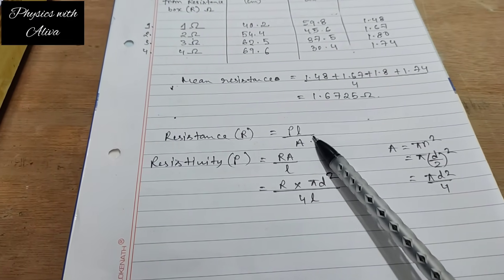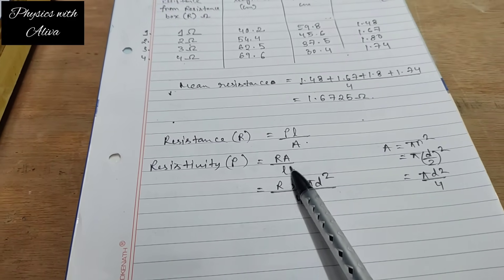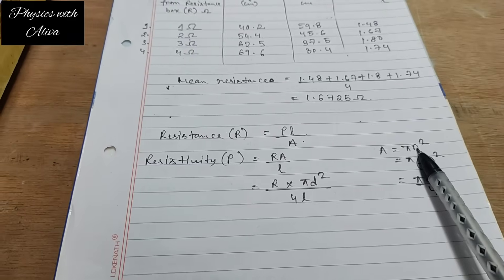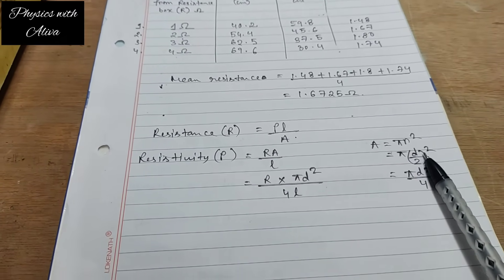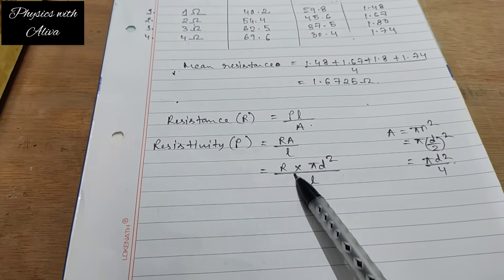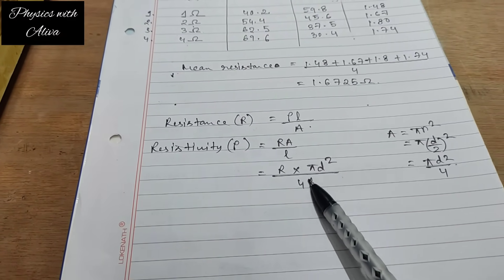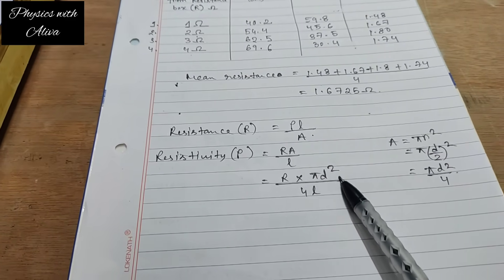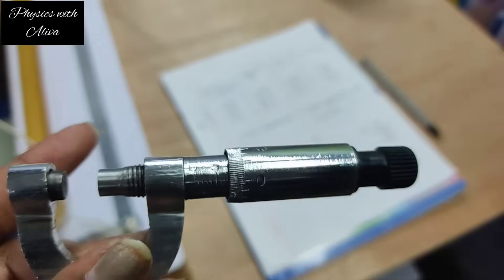We have already taken the readings. We calculate the 100 minus L column and then calculate the unknown resistance X using the formula. We take the average of the four calculated values — this is our mean resistance of the resistance wire calculated using the Wheatstone bridge principle. Now we have to calculate the resistivity. The formula is ρ = XA/L, where area is πr² and r = d/2, so ρ = Xπd²/(4L).